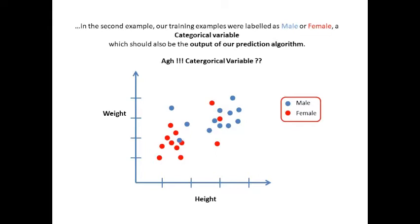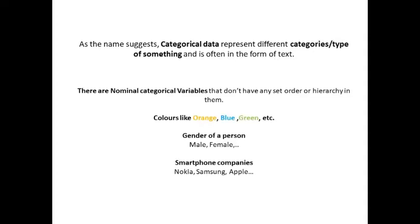Oh, what is this categorical variable now? As the name suggests, categorical data represent different categories or types of something and is often in the form of text. There are nominal categorical variables that don't have any set order or hierarchy in them. Colors like orange, blue, green, etc. Gender of a person like male, female, or smartphone companies, etc.